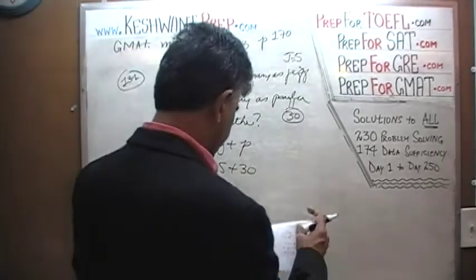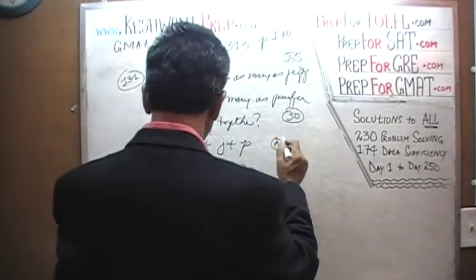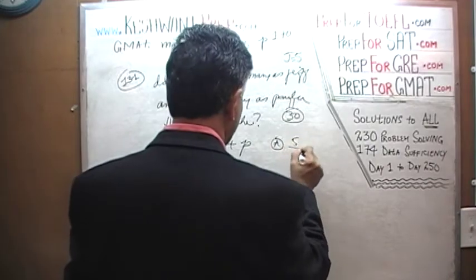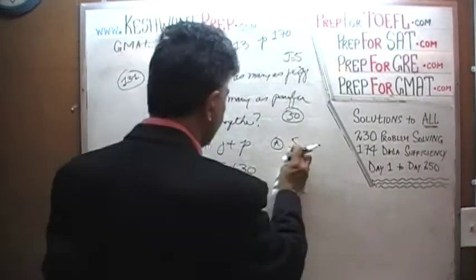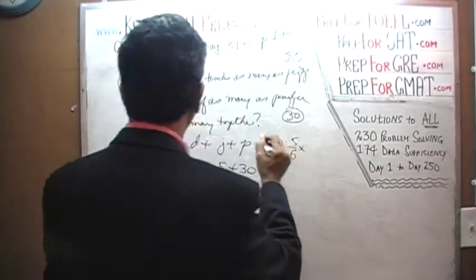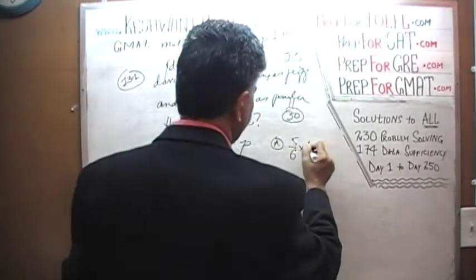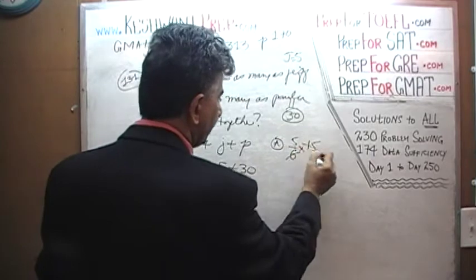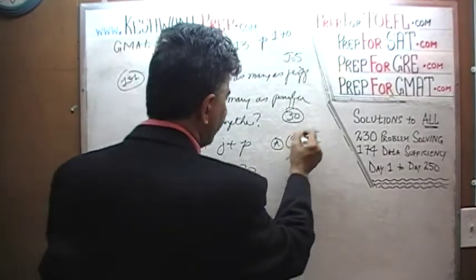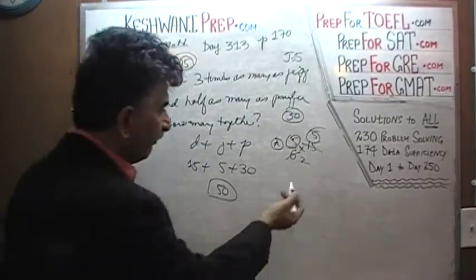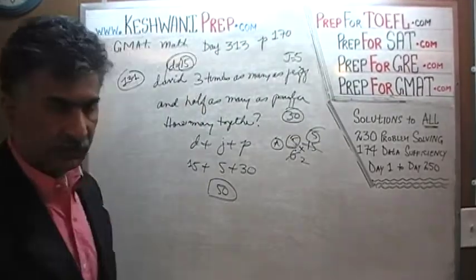Let's look at answer choices. A says 5/6 D, and D is 15. So it's 5 times 15 divided by 6. 5 times 5 is 25, 25 divided by 2 is not going to give us 50. A does not work.